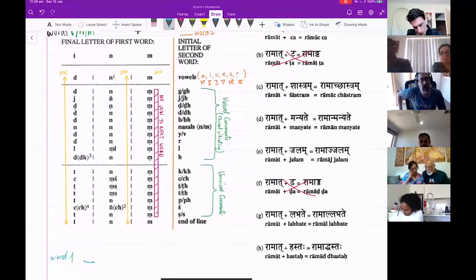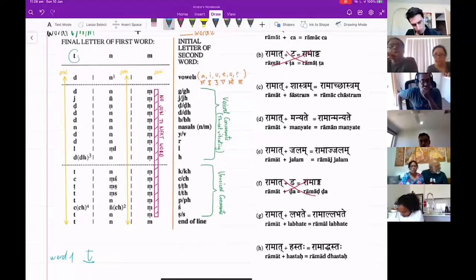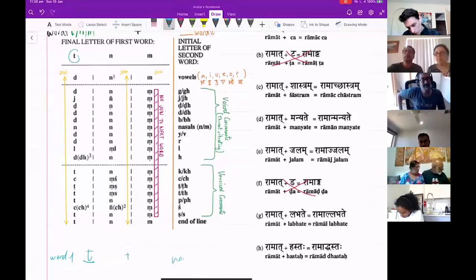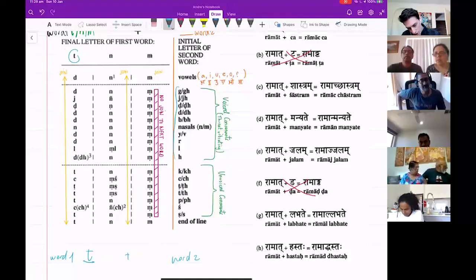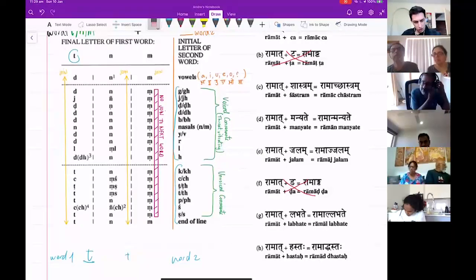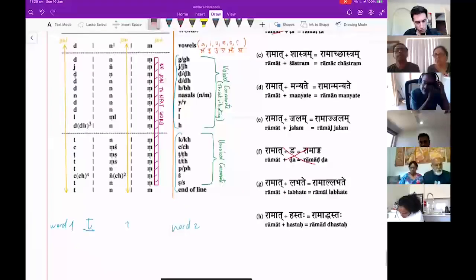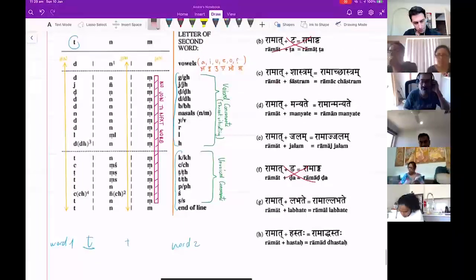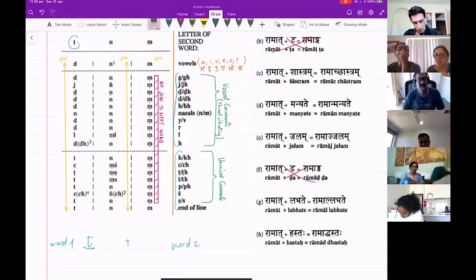So word one ends with a T and it joins word two that begins with this column or this column. Suppose word one ends with T and it joins a word that starts with G.